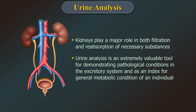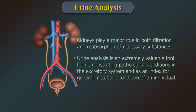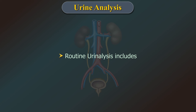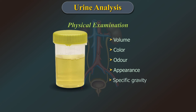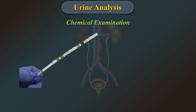Routine urine analysis includes physical examination for volume, colour, odour, appearance and specific gravity. Chemical examination for glucose,